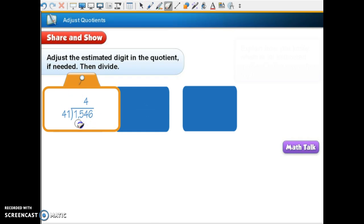3 times 1 is 3, and 3 times 4 is 12. And now I can subtract, I got 31. Is that lower than our divisor than the 41? Yes, so is that going to work? Okay.